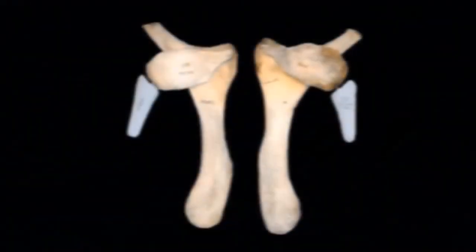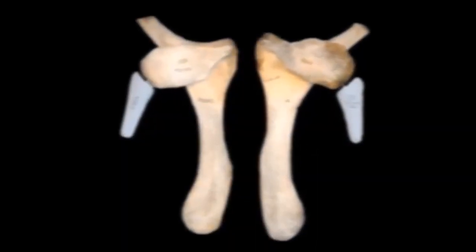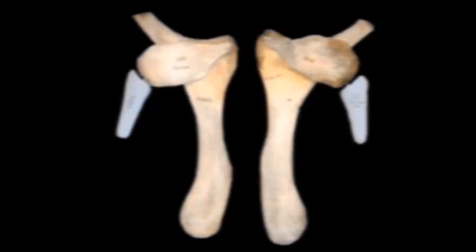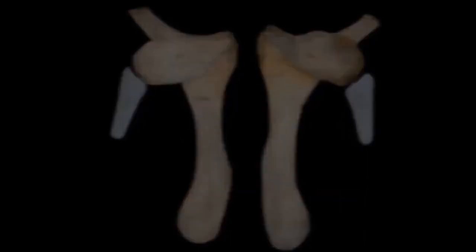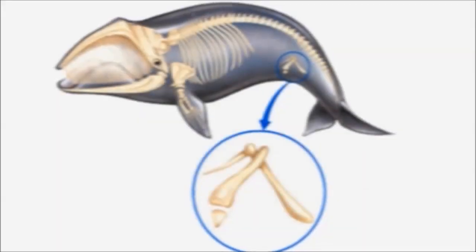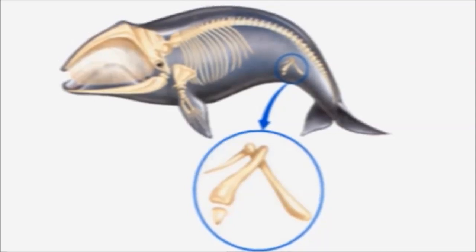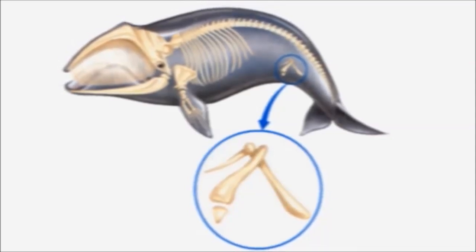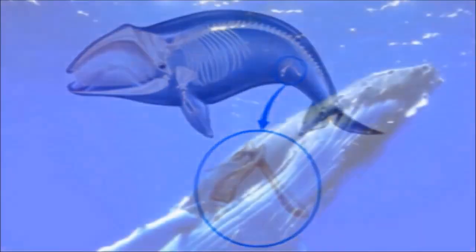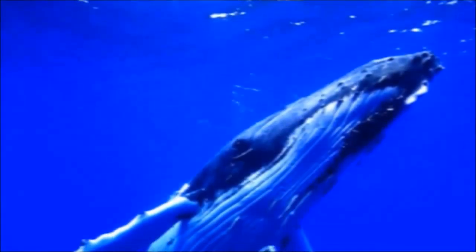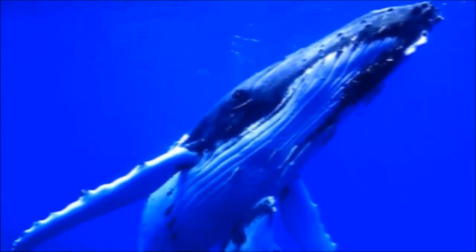In fact, the only reason modern whales even have a pelvis at all is because these bones are still utilized in the birthing process. Keep in mind, even though the whale's pelvis is reduced, it would not have been beneficial to lose it altogether, as in the case of their hind legs, because only useless structures are discarded by natural selection.